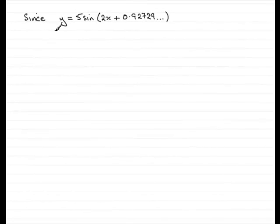Okay, so in this part of the question, we've got to find out where the curve C crosses the x-axis. And this will be when y equals 0. We know from the previous part that y equaled this value. Alright, 5 sine 2x plus 0.92729 and so on.